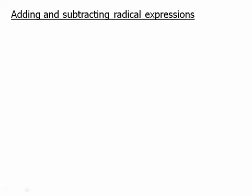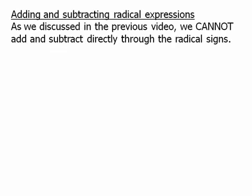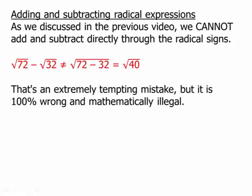So first of all, we'll start with addition and subtraction. We'll begin with what we cannot do. As we discussed in the previous video, we cannot add or subtract directly through the radical signs. For example, if we had to do √72 - √32, it would be incorrect to do the subtraction and get √40. It's an extremely tempting mistake, but it is 100% wrong and mathematically illegal. It's especially important to be clear about this so that you don't make this mistake when you're under pressure.